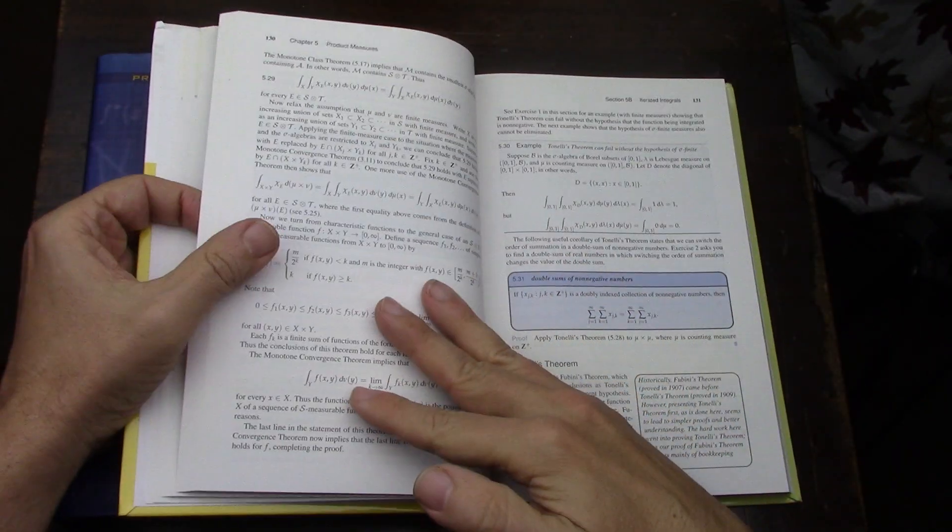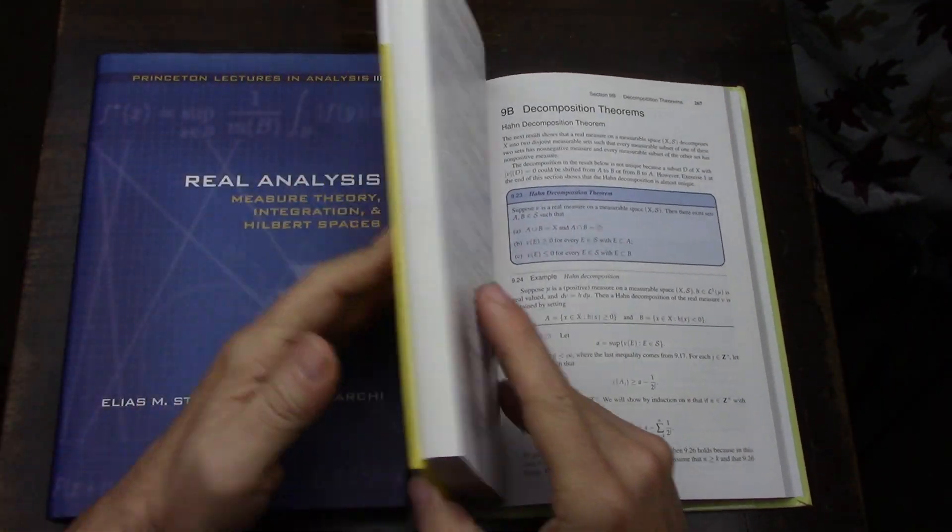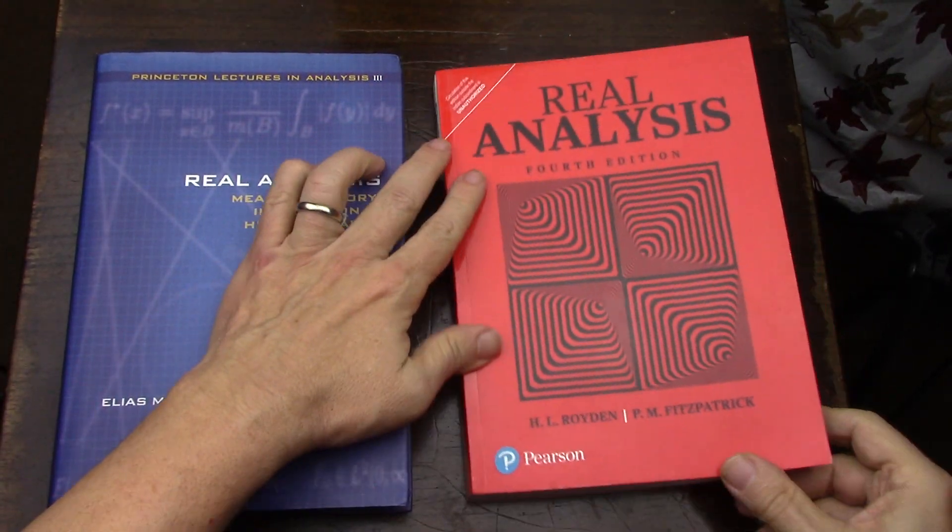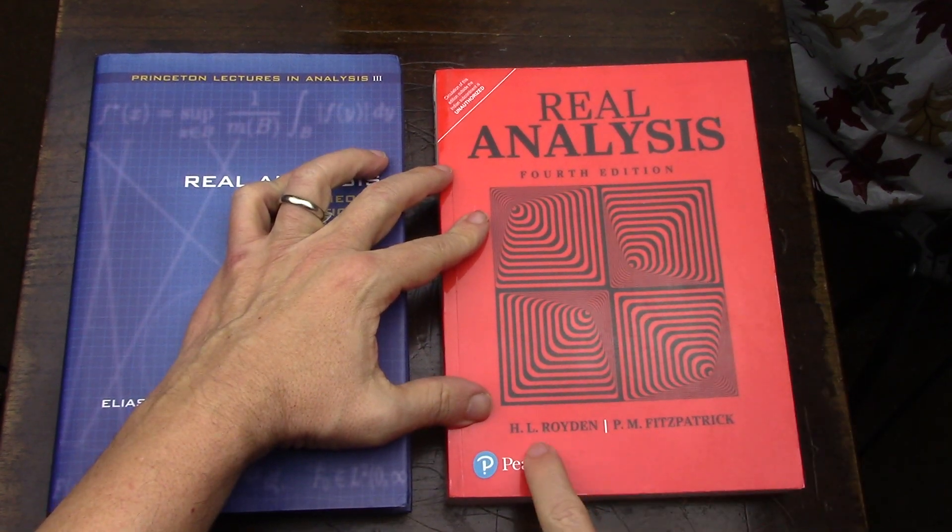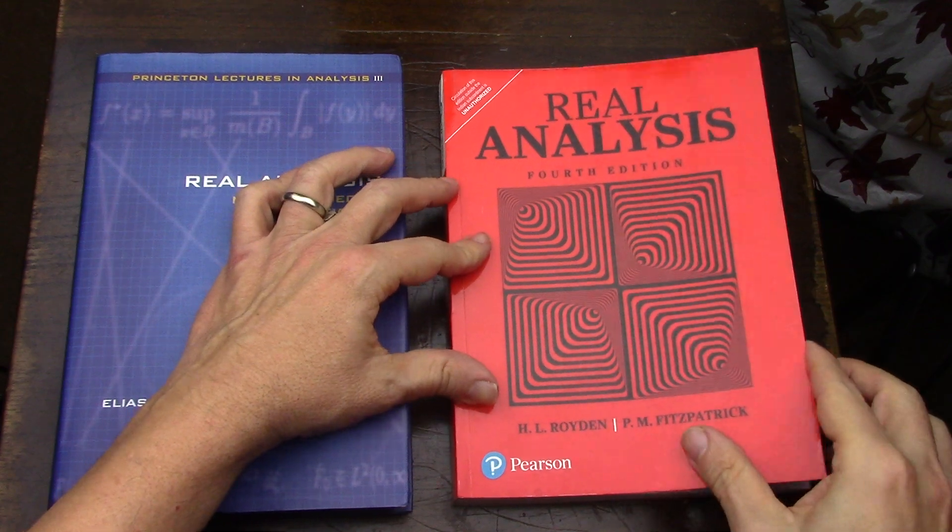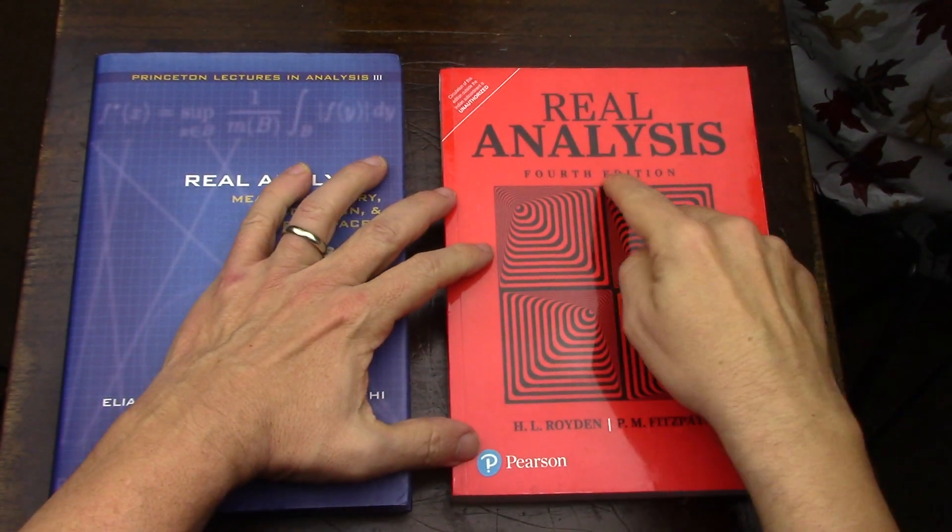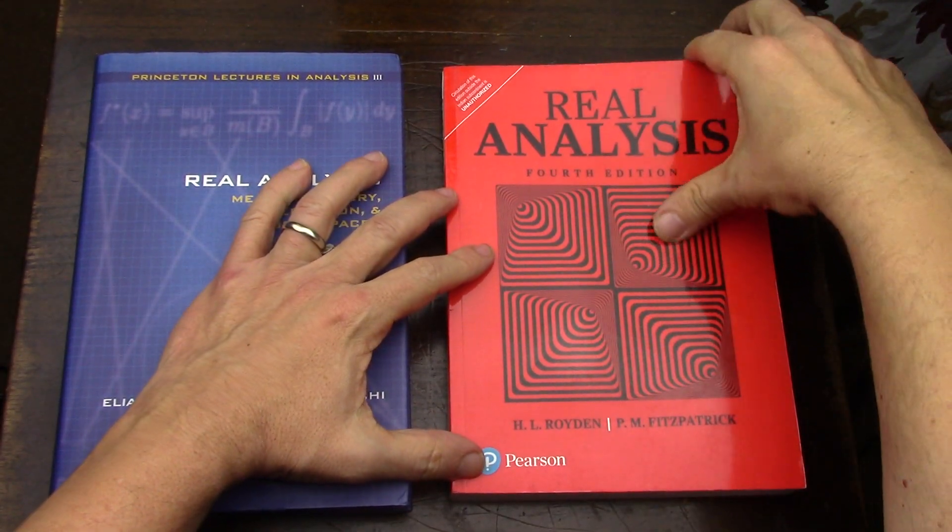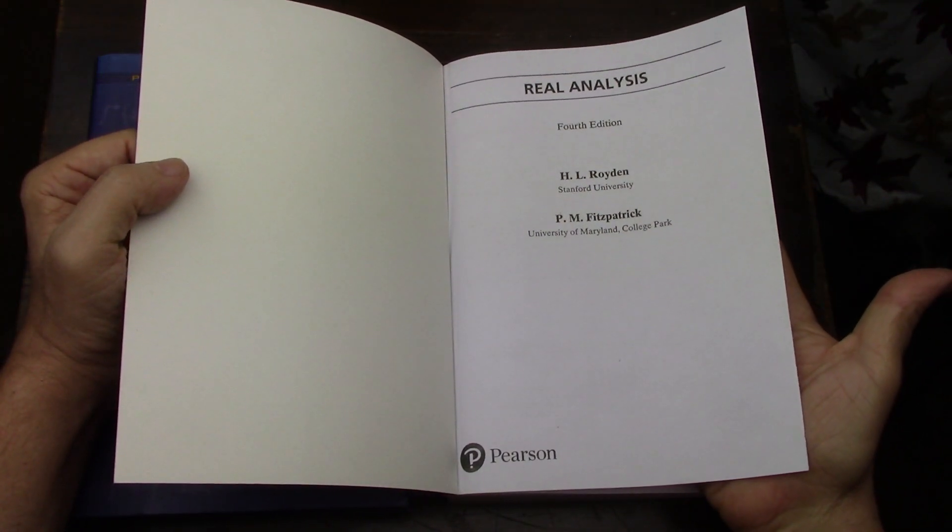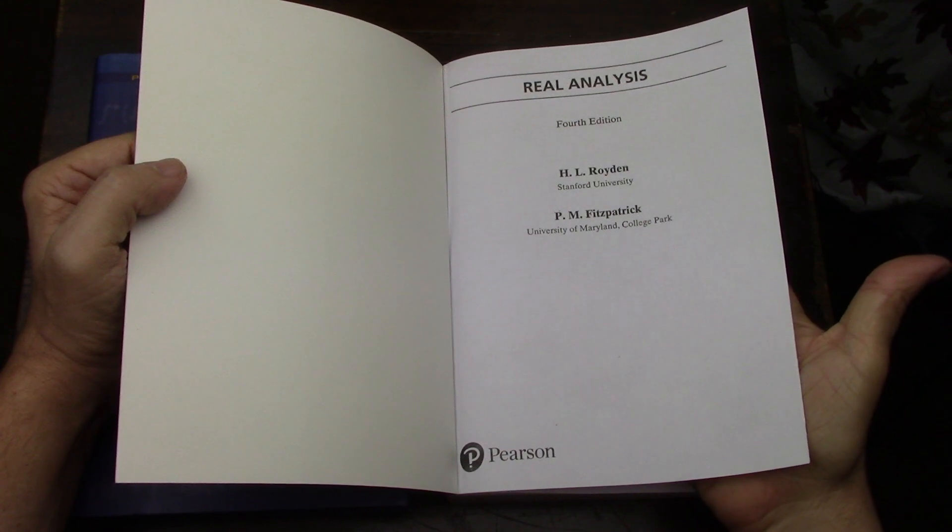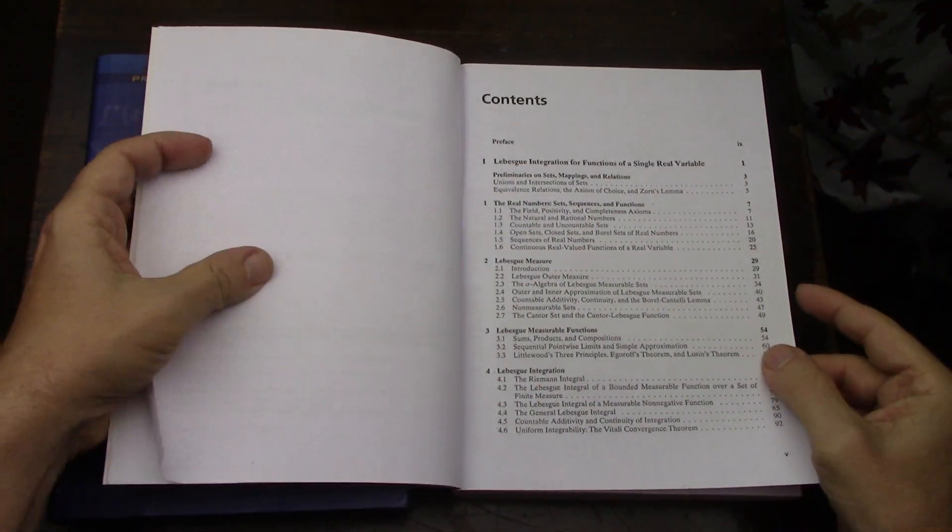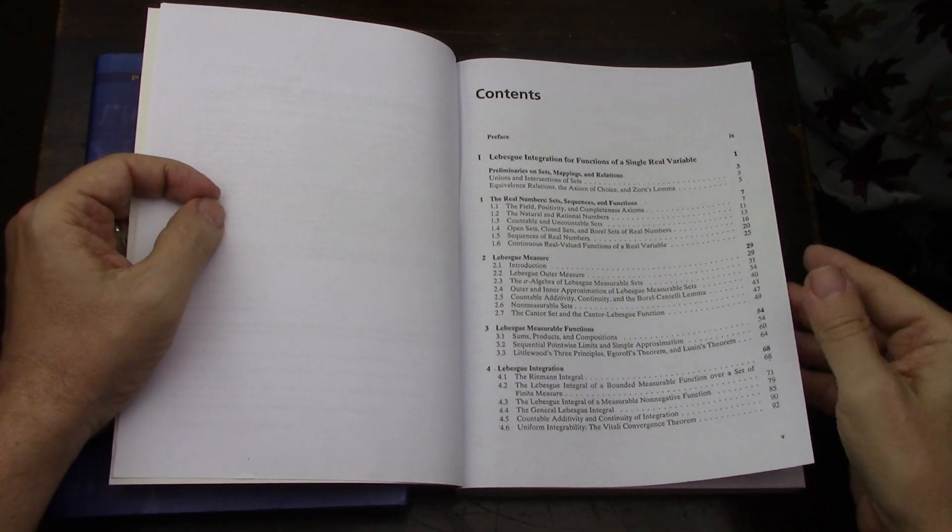Finally, there's Royden's book, which after he passed away got another author to make a fourth edition. This is an Indian print. I plan at some point to get the original Royden, the one not printed in India, from Stanford.